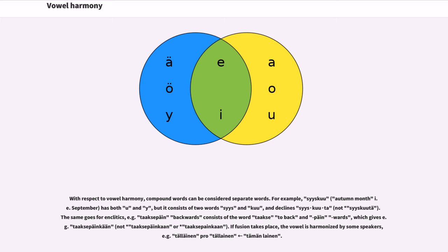For example, sisäkkö has both U and Y, but it consists of two words — sisä and köö — and declines as sisä-middle and köö-middle-tä. The same goes for enclitics; for example, taaksepäin (backwards) consists of the word taakse (to back) and päin (wards), giving for example taaksepäinkan. If fusion takes place, the vowel is harmonized by some speakers, for example talon and protalon and talonlanon.